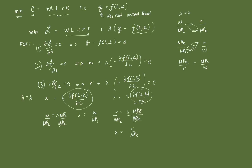Now let's look at the implications of the first-order conditions. The first one is simply Q equals F(L,K). It means the firm must produce Q units of output — that is, in cost minimization, the firm has a desired level of output and must be able to achieve that production target.